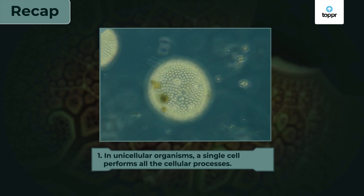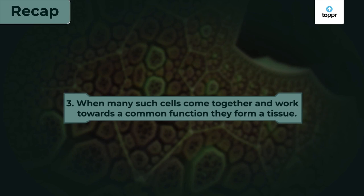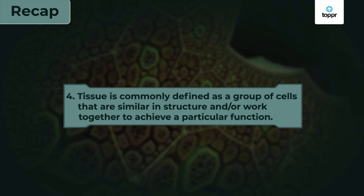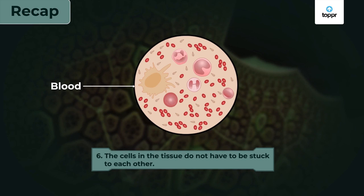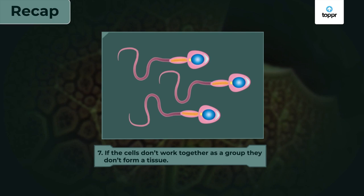Let's recap what we learned. In unicellular organisms, a single cell performs all cellular processes. In multicellular organisms, cells get modified to perform one particular function — these are called specialized cells. When many such cells come together and work towards a common function, they form a tissue. Tissue is commonly defined as a group of cells similar in structure and/or working together to achieve a particular function. The cells in a tissue can be of different types, but all cells should work towards a common function. The cells do not have to be stuck to each other, and tissue can be in liquid form — blood is one such tissue.